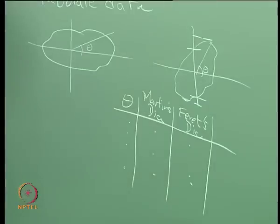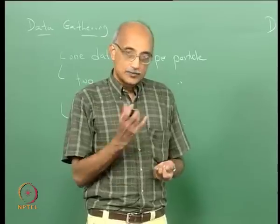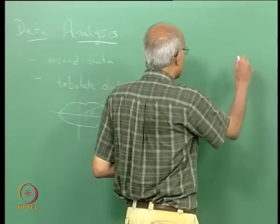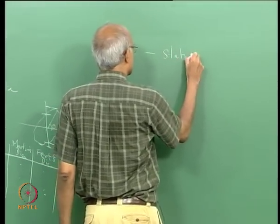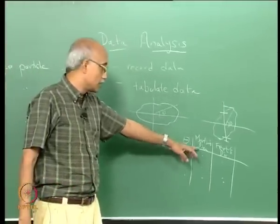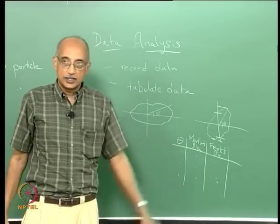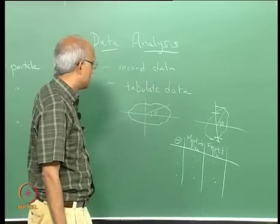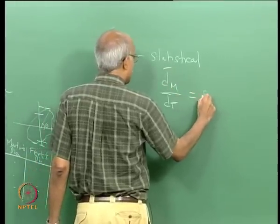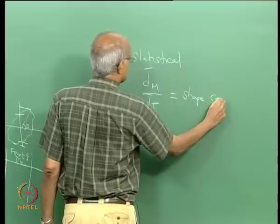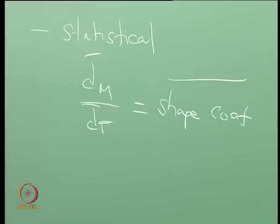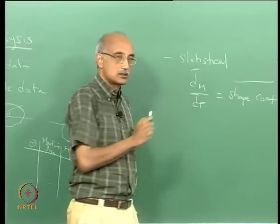Extending this further, more sophisticated data analysis could be statistical. You can average all the Martin's diameters as a function of theta and average all the Ferret's diameters, and take the ratio of mean D-Martin over mean D-Ferret as an average shape coefficient. This is a simple statistical representation where you are only taking the means of your measurements as a function of theta.